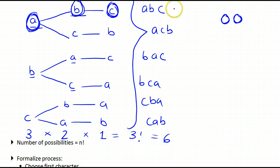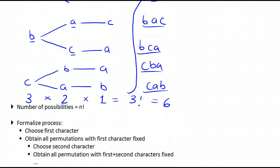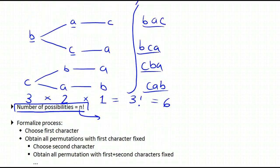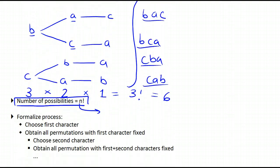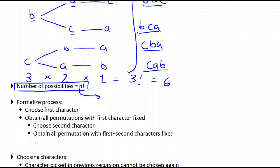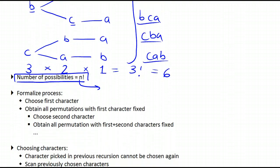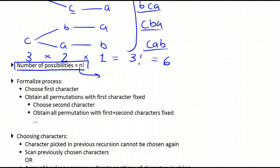And this is how many possibilities we have: 1, 2, 3, 4, 5, 6. So the number of possibilities is n factorial, where n is the number of characters in your string. Now we've observed how we solved this problem — let's try to formalize it and come up with an algorithm.